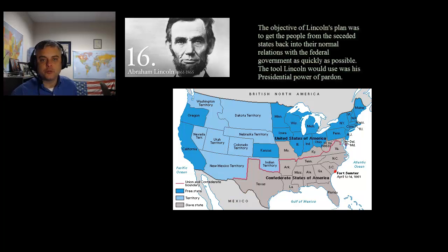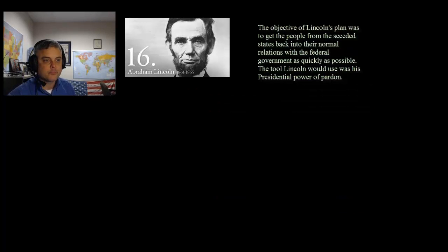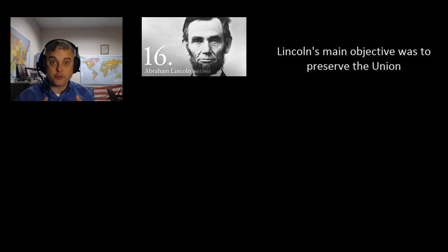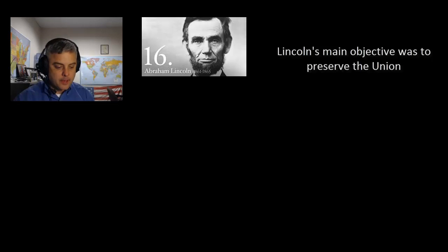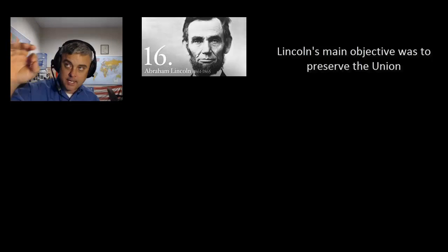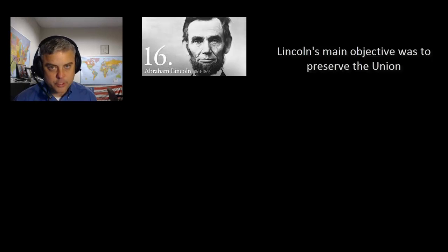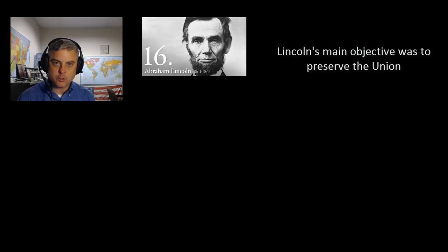The tool Lincoln was going to use was his presidential pardon to achieve these ends. Lincoln's main plan was to basically preserve the Union at any cost. What he's most worried about is that as the victor, there are going to be many people in the North wanting to really rub the South's nose in it. He understands, as someone who appreciates history, that this is only probably going to lead to future conflicts. So he wants to preserve the Union.